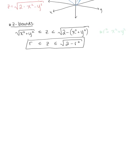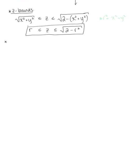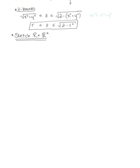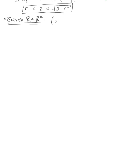Now we want to sketch the projection of our solid into the xy-plane — the two-dimensional region R in ℝ². The projection is the shadow cast by our solid into the xy-plane. We should always find the exact value rather than trusting the sketch. When sketching the two-dimensional region, we keep in mind that z = 0 in the xy-plane, so we'll equate the surfaces and simplify.